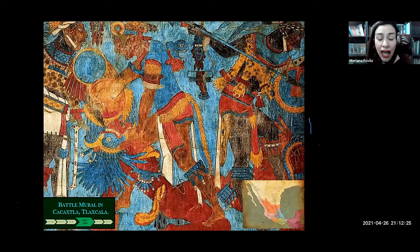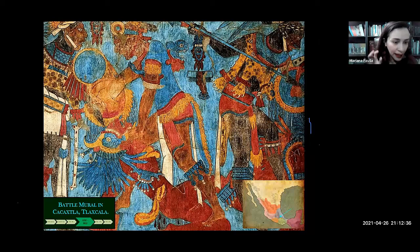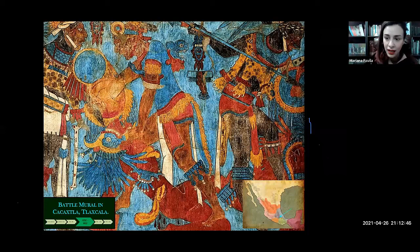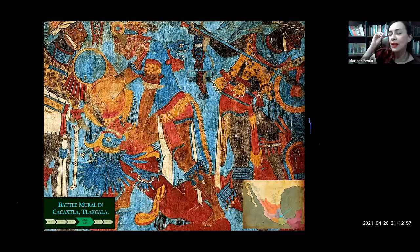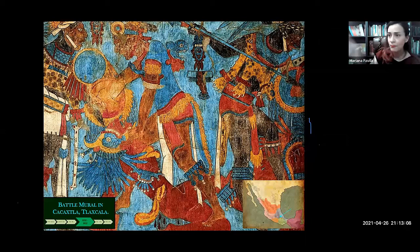Another city called Cacaxla, also in central Mexico, shows relations between the Mayan area and central Mexico. In Cacaxla we have mural paintings depicting a battle very similar to the ones we saw in Bonampak. The colors used and the naturalistic way in which it is depicted are not common in central Mexico — clear evidence of Mayan influence. Maybe some Mayan artists came to Cacaxla and painted this mural.